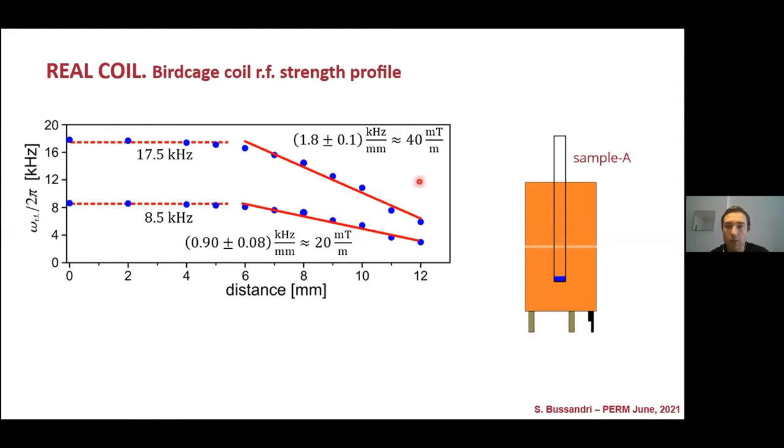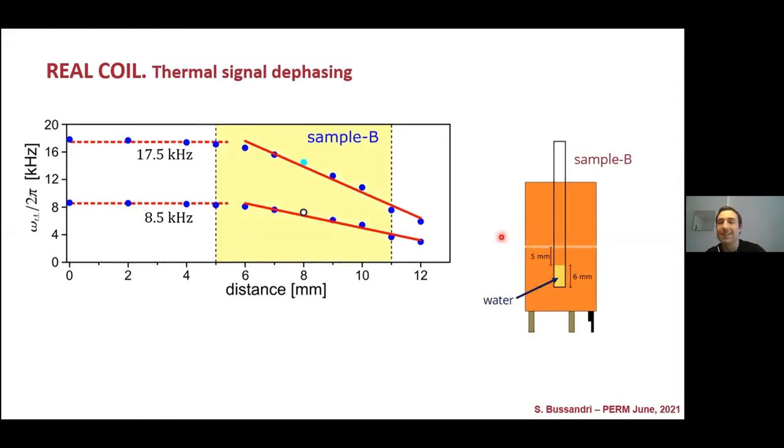The next thing that we want to test is that if we put a sample in the inhomogeneity region of the coil, it will suffer signal defacing as we calculated before. So again, we place a 6 mm length sample of water, place it 5 mm below the center of the coil.